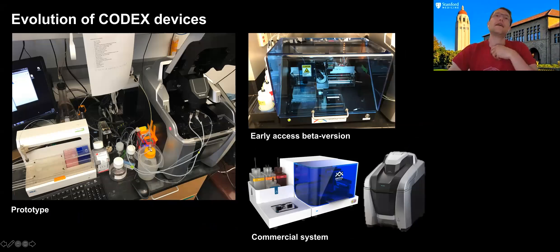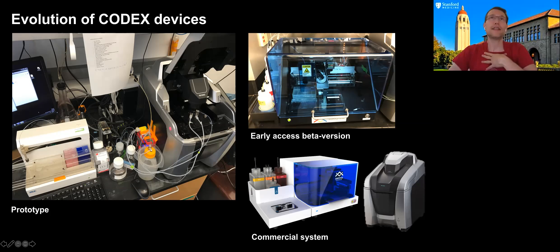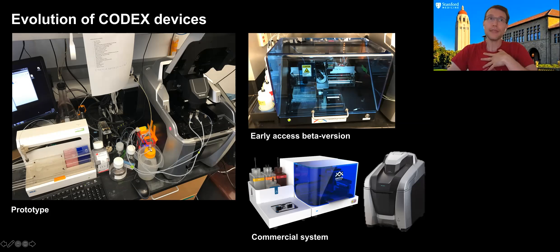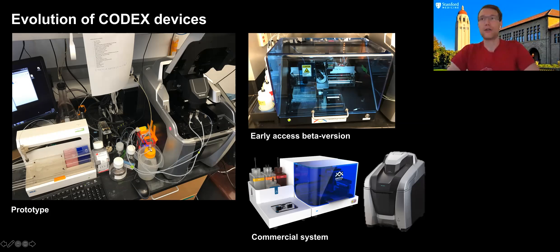The Nolan Lab has gone through different stages of CODEX device evolution — from a prototype designed by Yuri Goltsev and Nikolai Samusik, essentially an autosampler with a pump and valve bringing reagents into the microscope, to an early-access version, and now a commercial product available for sale from Akoya.